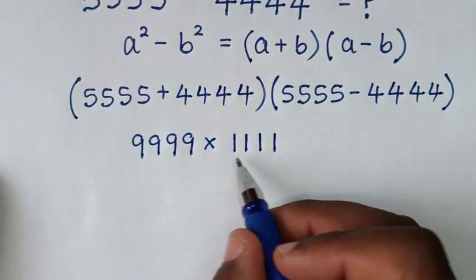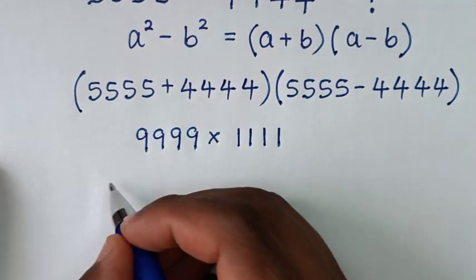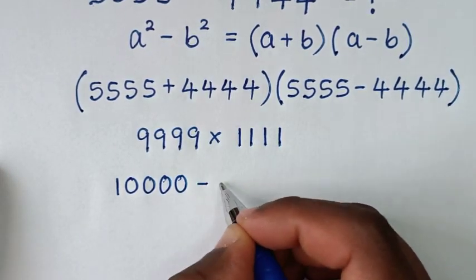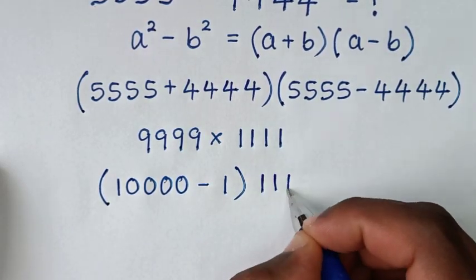Then to easily multiply this, 9999 is the same as 10,000 minus 1, times 1111.